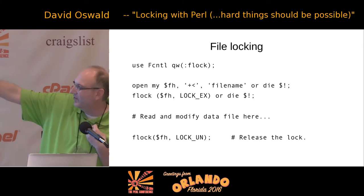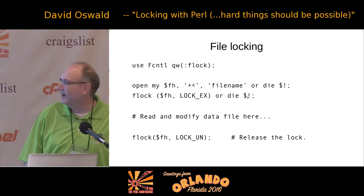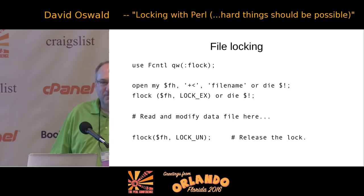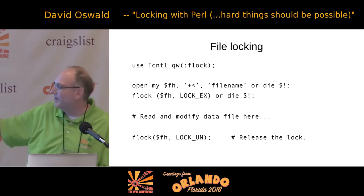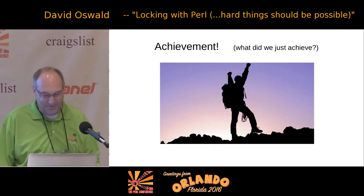Here's flock in action: use Fcntl importing the constants, then open a file handle in read-plus-write mode, die if we can't open. Then we try to get an exclusive lock and die if we can't get the lock. There is an eternity of time between the open and the flock, but in this case that's okay because we're just going to open, lock, and then read and modify the data. When we're done, we release the lock with lock_UN. What have we achieved? We got an atomic operation.